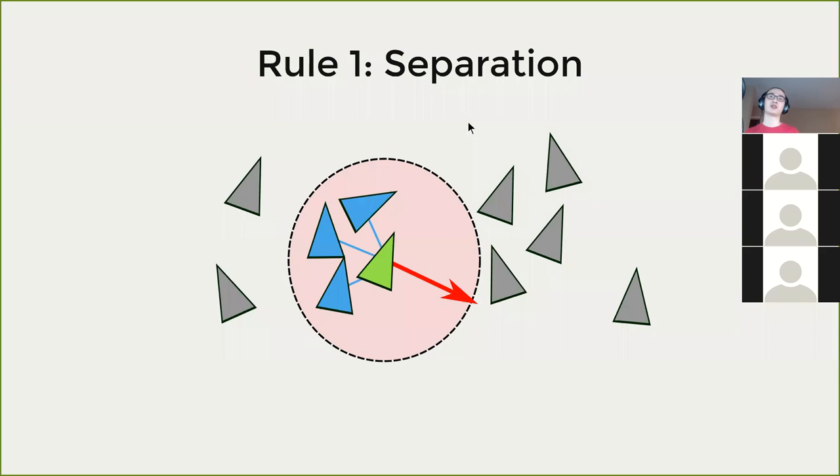The first rule is called separation. The idea is that if we have a bunch of boids nearby our boid, then those boids will try to repel our boid away because our boid does not want to be overcrowded. Notice all of the boids have this concept of a sphere of influence. If something is outside of the distance, they do not have any impact on our boid.